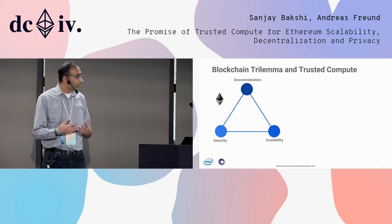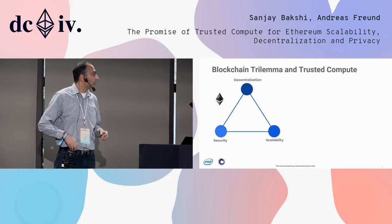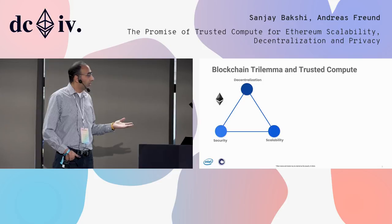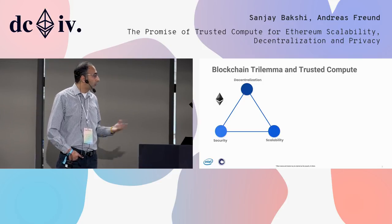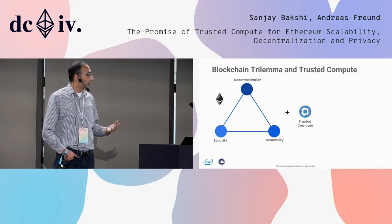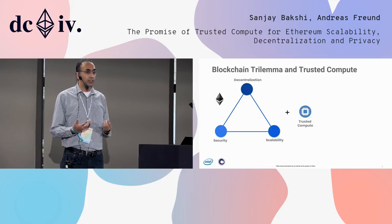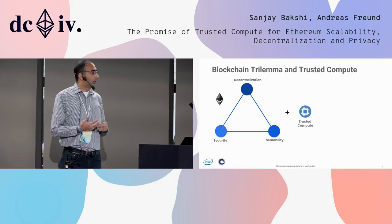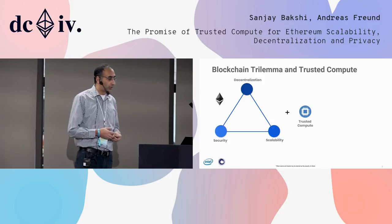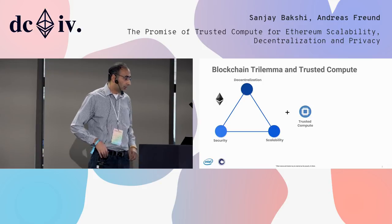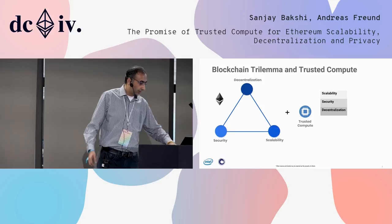How can trusted compute play in this space? You've probably seen this picture — the blockchain trilemma. The problem is you can get two of the three, not all three. So can we do something with trusted compute so that we can achieve all three: scalability, decentralization, and security? Let's talk about each of these briefly.